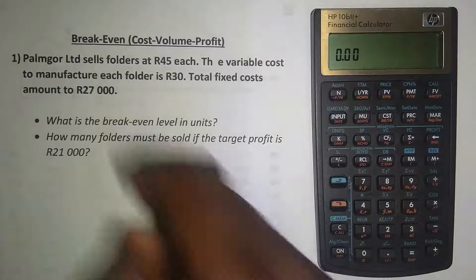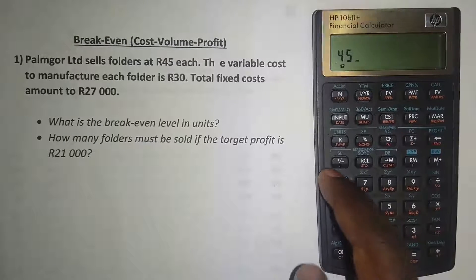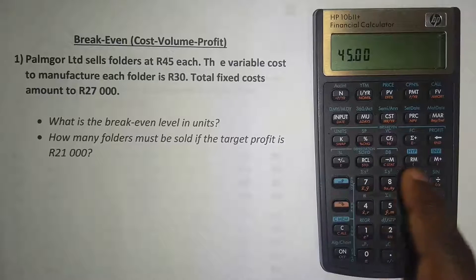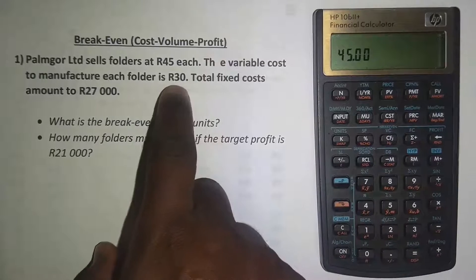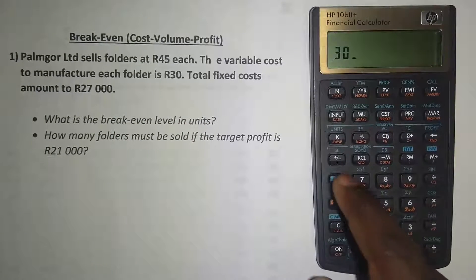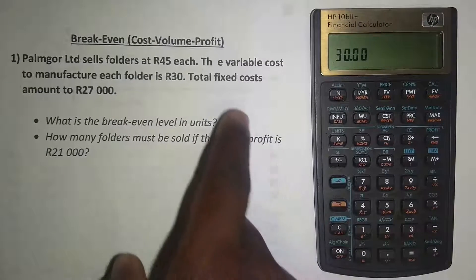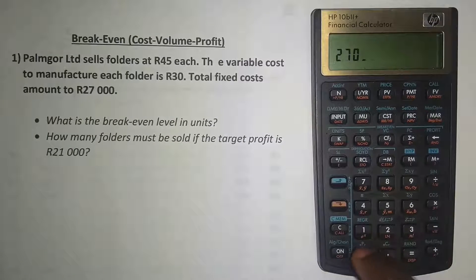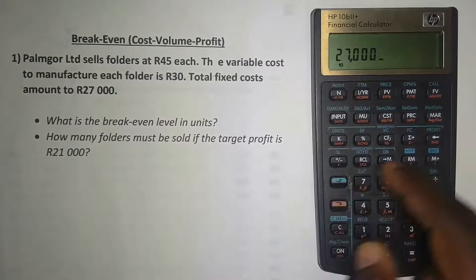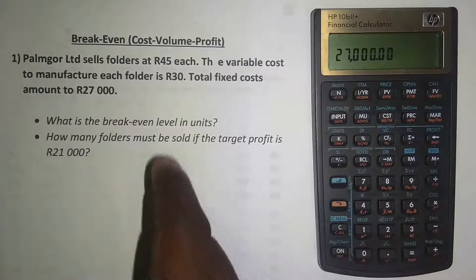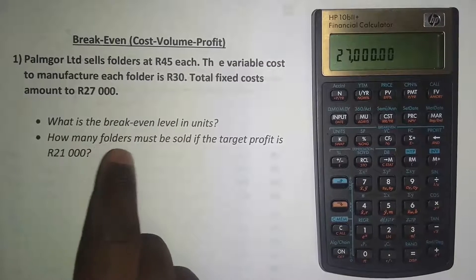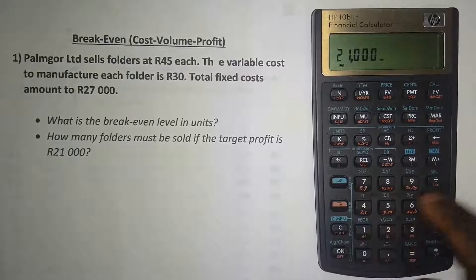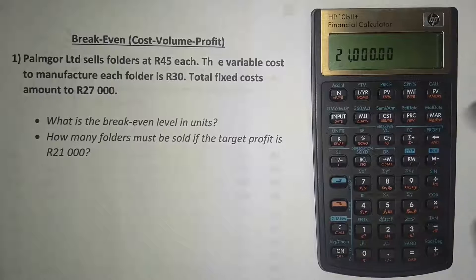Let's put in the selling price: 45, blue button, then press this percentage sign — on top is written selling price. Then the variable cost is 30 Rand, so I press 30, blue button, and then the variable cost. Then the total fixed cost is 27,000 Rand, so I press 27,000, blue button, then press the fixed cost. And then we want to make a profit of 21,000 Rand, so I press 21,000, blue button, and press this last button — it's written profit.